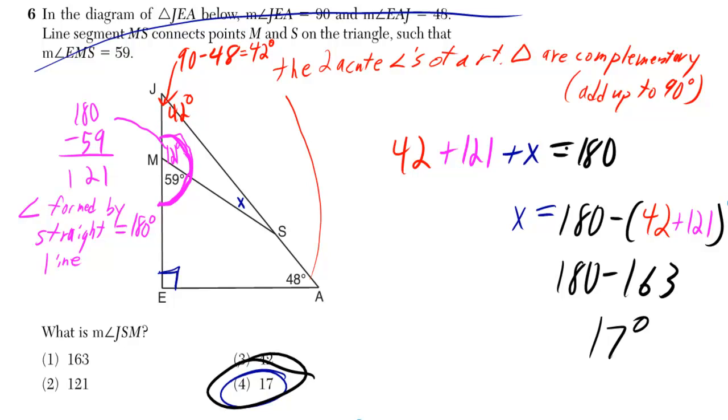So that means we're going to do 59 plus something gives us 180, but you could also just immediately do 180 minus 59, and that gives you 121.